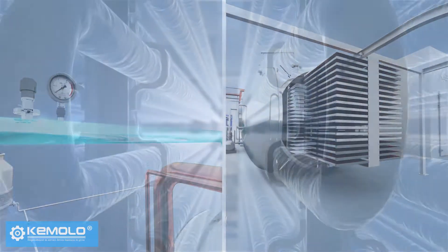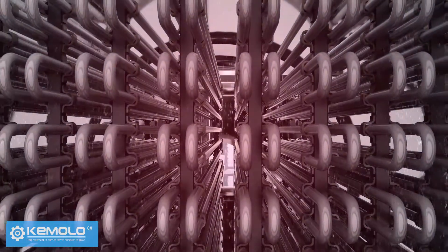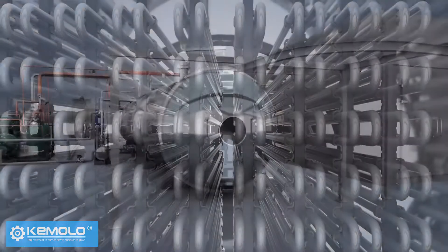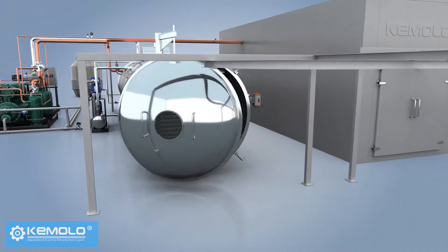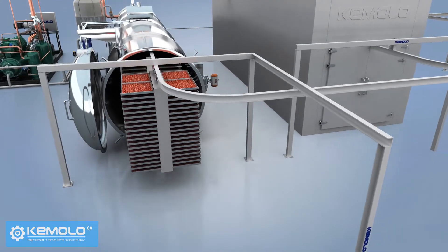After discharging, the frost on the water vapor collector needs to be defrosted for the next batch of production. Therefore, the freeze drying must be produced in batches and the interval between each batch is about 1-2 hours.